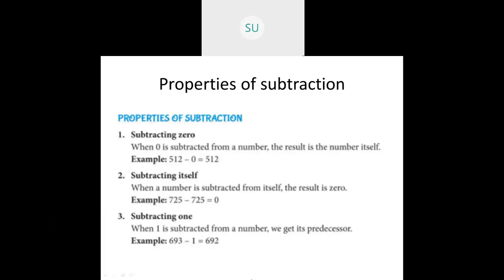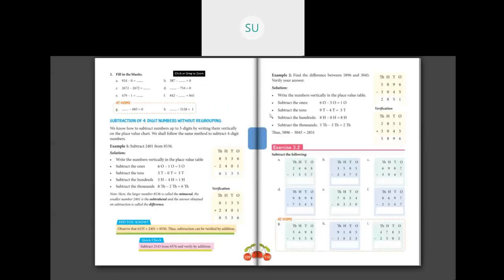We missed the questions last time, so we will complete the questions on properties of subtraction now. Page number 109, second question, fill in the blanks. 924 minus 0: whenever you subtract 0 from any number, the answer is the number itself. So 924 minus 0 is 924.